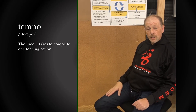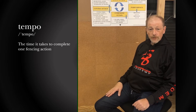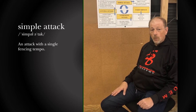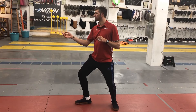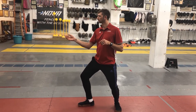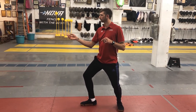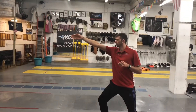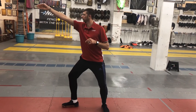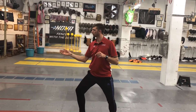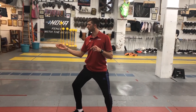A fencing tempo is the time it takes to complete one fencing action. A simple attack is a one-tempo attack. Here are some examples of a simple attack: a thrust, an advanced thrust, or a lunge.